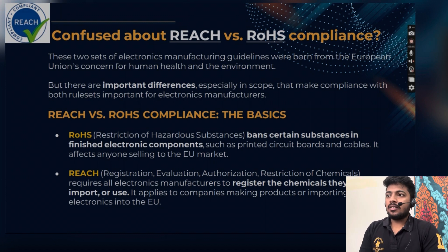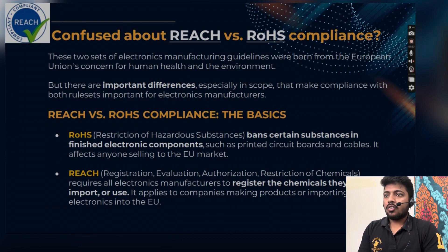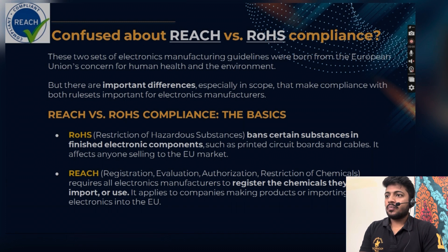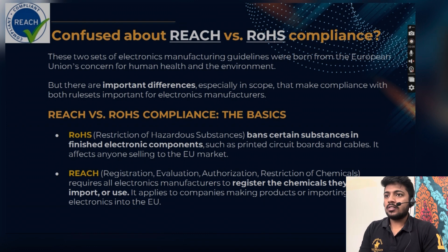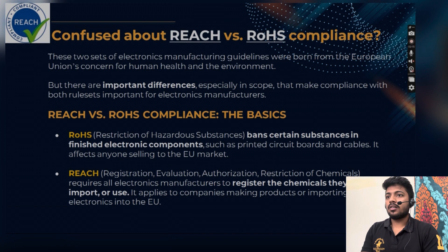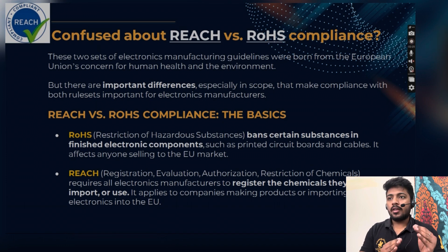RoHS — Restriction of Hazardous Substances — bans certain substances in finished electronic components such as printed circuit boards and cables. It affects anyone selling to the EU market. I already uploaded a video on RoHS on my YouTube channel where I explained the 10 hazardous substances that are banned by the European Union and are allowable only up to a certain limit as decided by the European Union.